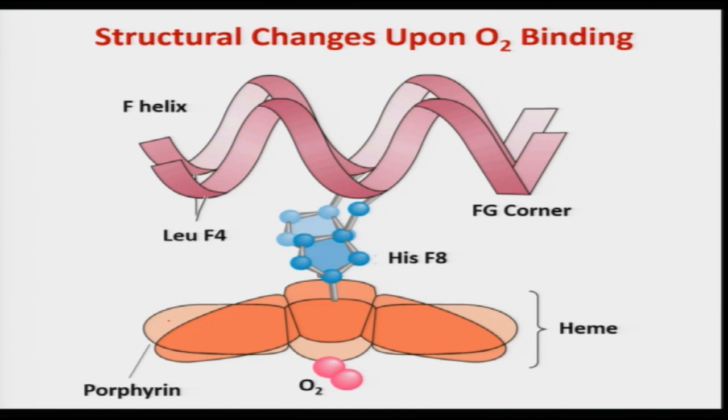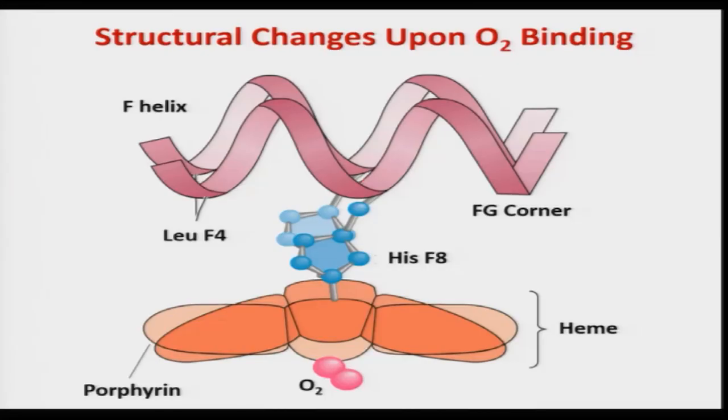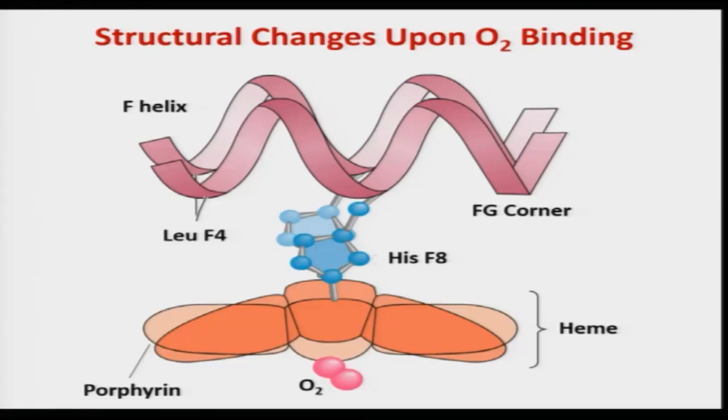There is a huge structural change upon dioxygen binding. The heme center, which was highly dome-shaped, now becomes planar after dioxygen binding. There is a change in the heme porphyrin ring, a huge change in iron displacement, and a huge change in the proximal histidine. Since the proximal histidine is also linked with the protein chain, it makes a huge change in the entire protein, which generates cooperativity particularly in hemoglobin.